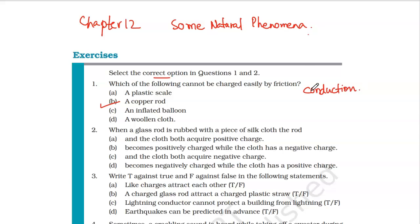So if you have a problem understanding this question, you can just see the method of charging by conduction. Metals are good conductors of electric charges — they are charged easily by the process of conduction. When it comes to friction, they cannot be charged easily. So the correct answer will be copper rod.